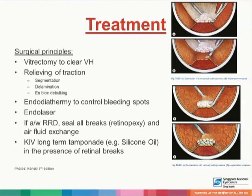The top two photographs show the presence of delamination, while the bottom two photographs show segmentation. Endodiathermy to control bleeding spots will be next, followed by endolaser. If associated with rhegmatogenous retinal detachment, we seal all breaks and perform air-fluid exchange subsequently. Keep in view long-term tamponade, such as silicone oil, in the presence of retinal breaks.